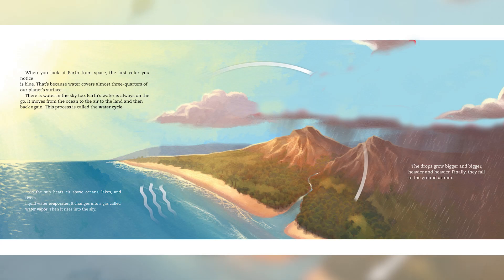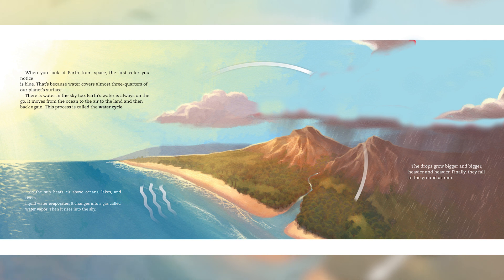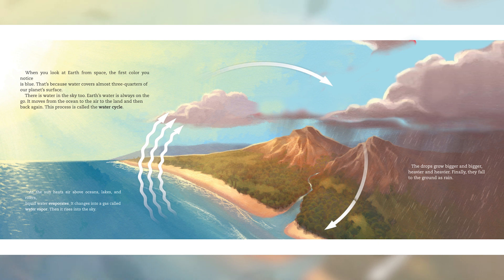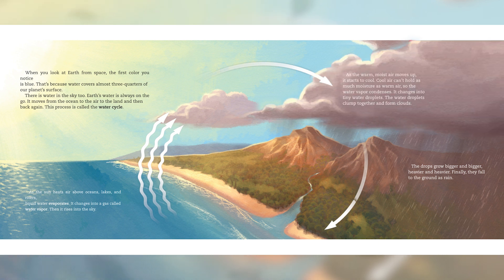When you look at Earth from space, the first colour you notice is blue. That's because water covers almost three-quarters of our planet's surface. There's water in the sky too. Earth's water is always on the go. It moves from the ocean to the air to the land and then back again. This process is called the water cycle.